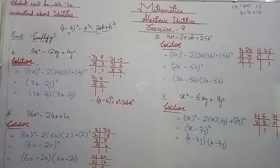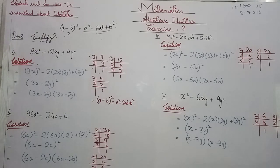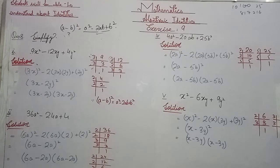Now we find the factors of 36a² minus 24a plus 4. The first coefficient is 36, the second coefficient is 24, and the third term is 4. We find the factors of each one by one.